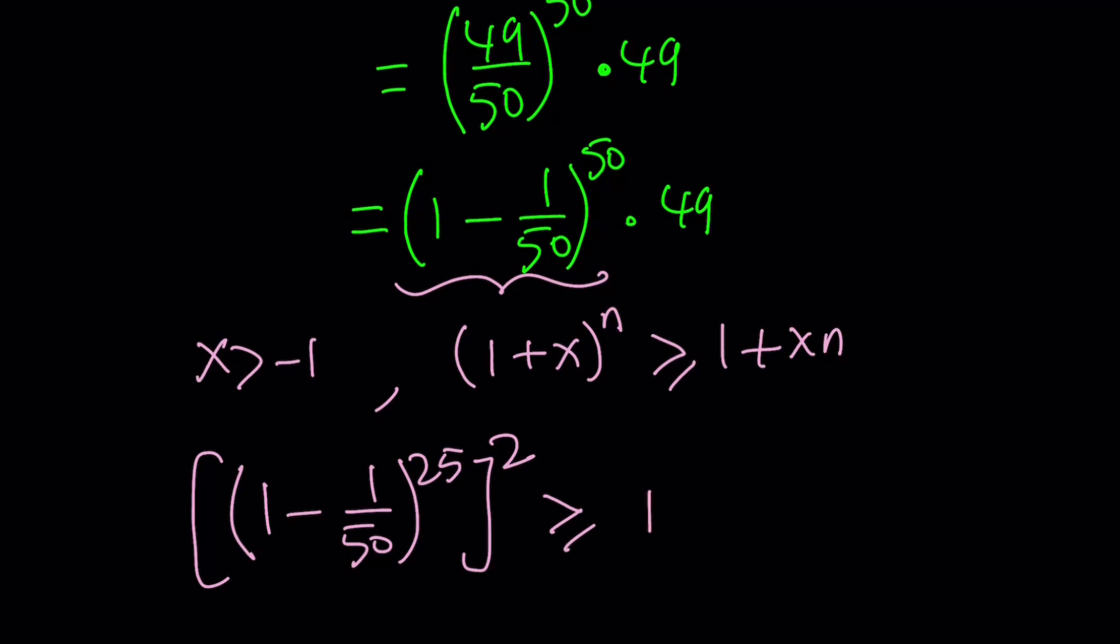This will be greater than or equal to 1 minus 1 over 50, which is 1 plus x, multiplied by n. In this case, n equals 25, and this is my x value. Then I need to square as well because of the outside.